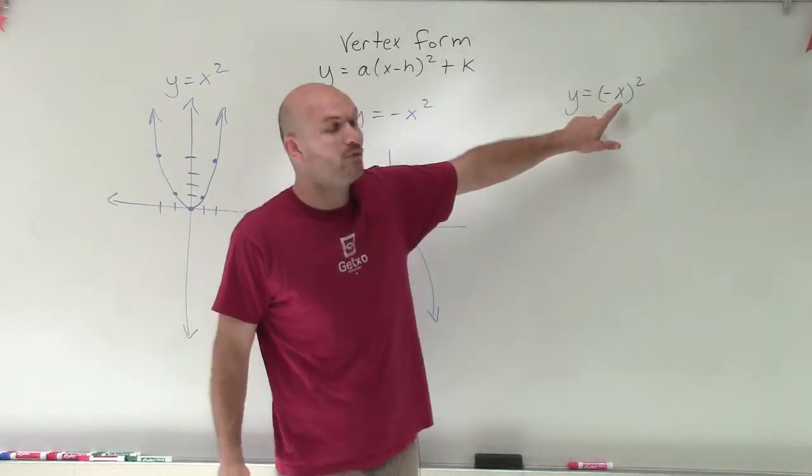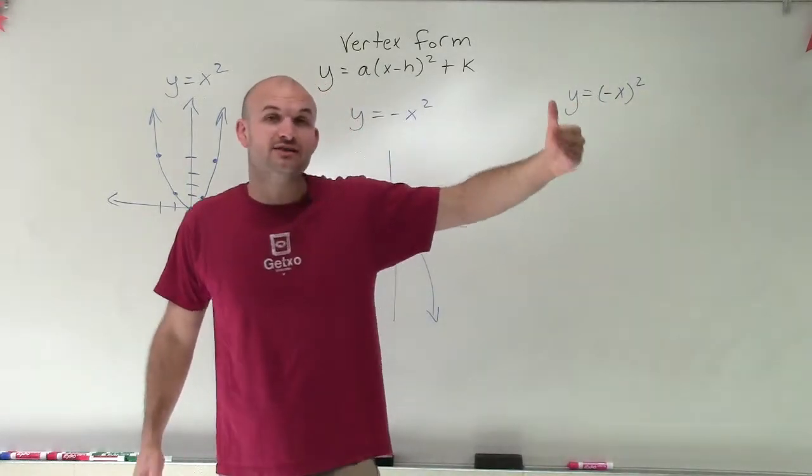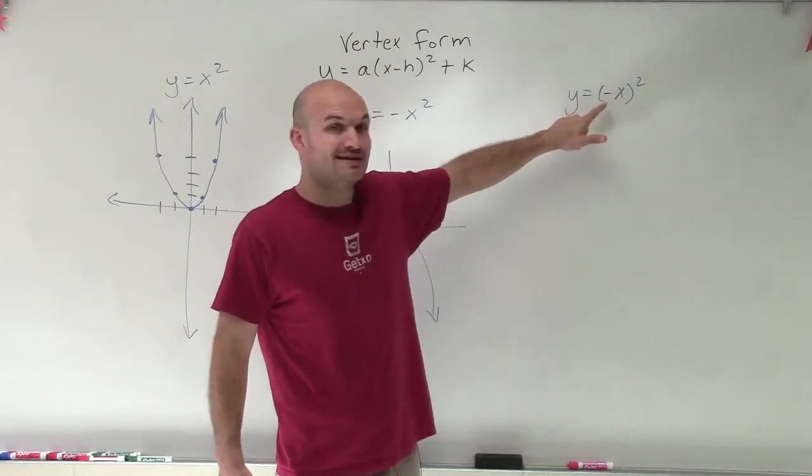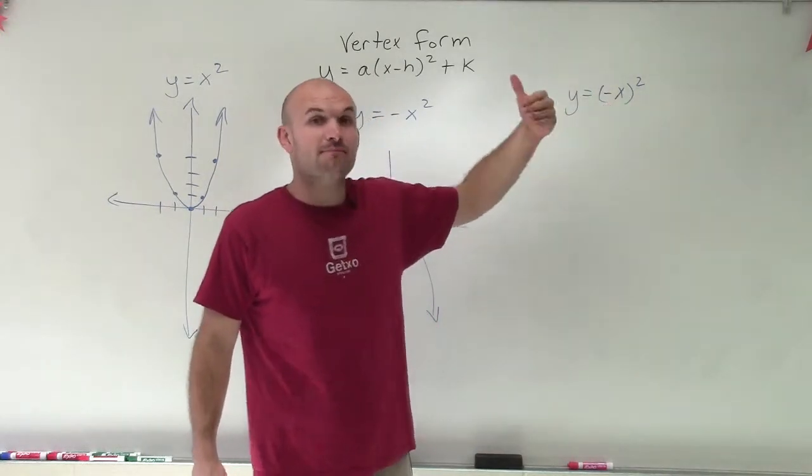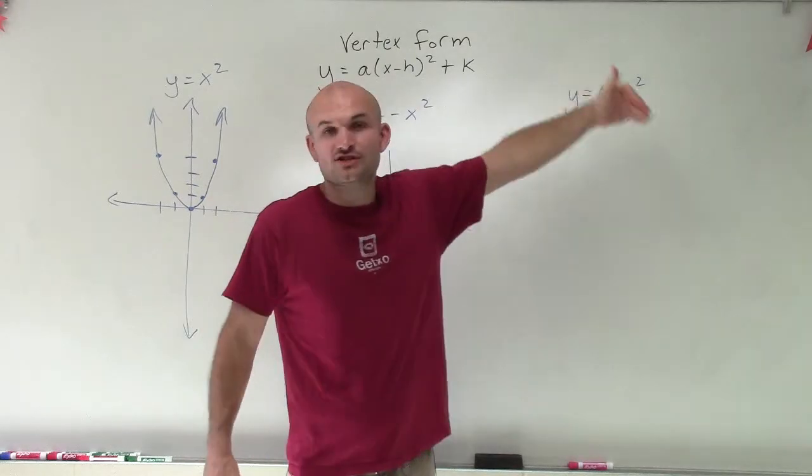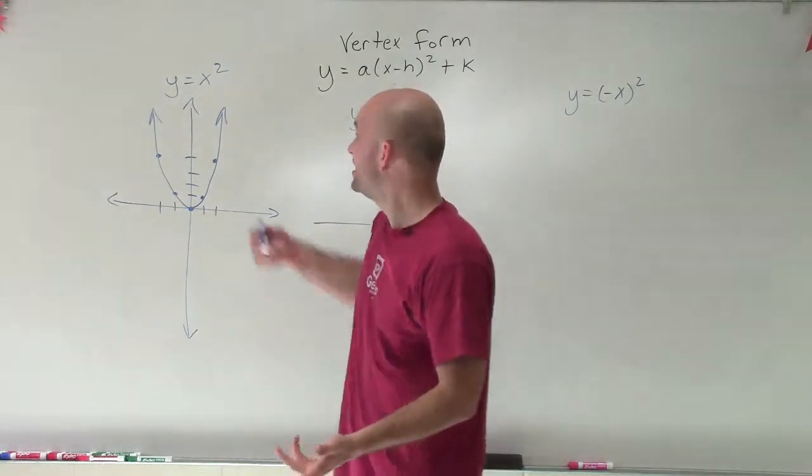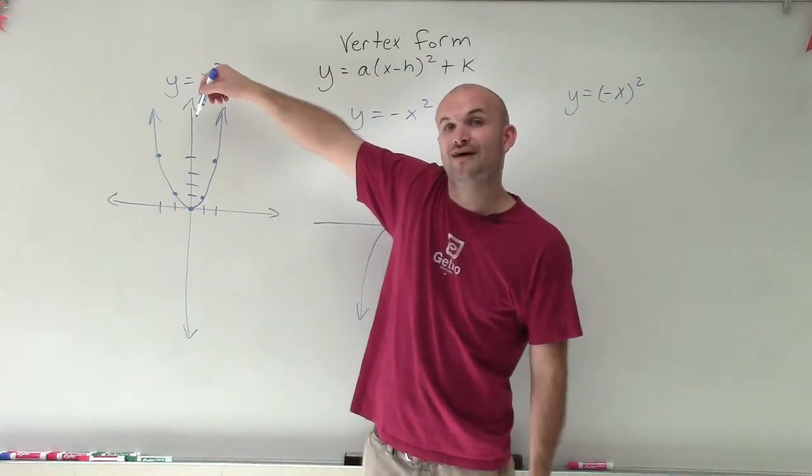Well, if you look at this, what I'm doing is no matter what x value I want to find the y-coordinates for, when I plug in my x value, I'm multiplying it by a negative number, but then I'm going to square it. Well, when you look at a table of values, no matter what you square, either a positive or negative number, you're always going to end up with positive values.